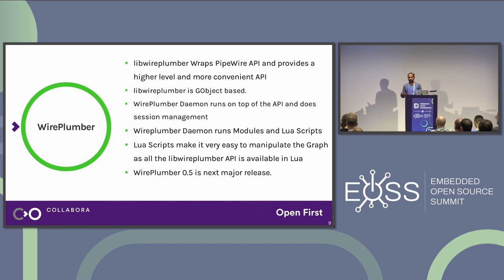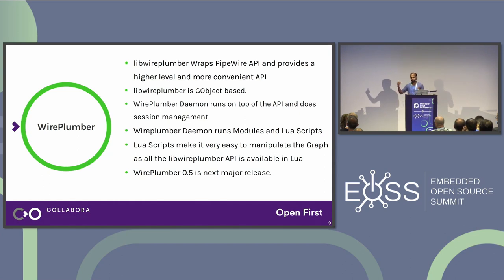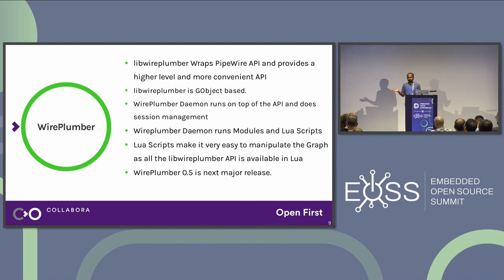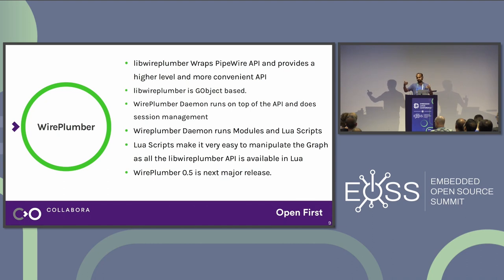WirePlumber is the default session manager for PipeWire. It has several parts. The first is the libwireplumber API, which enumerates objects and provides API access. It wraps the PipeWire API and provides a higher-level, more convenient API. Without WirePlumber, dealing with PipeWire is not that easy. WirePlumber is GObject-based — libwireplumber is written in C providing native C APIs, but other language bindings are available through GObject introspection.